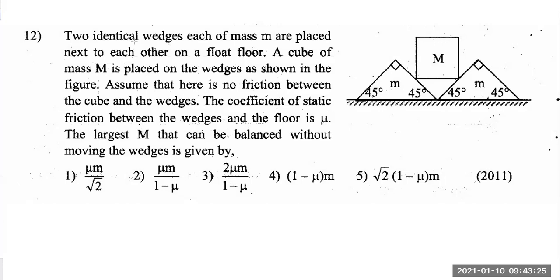Two identical wedges — that's an important thing. When the wedges are identical, whatever forces are acting on the left wedge, the same kind of forces will be acting on the right wedge symmetrically. Therefore, if you consider the equilibrium of one of these objects, that's more than enough.